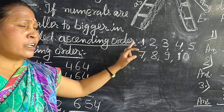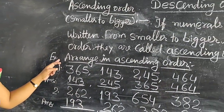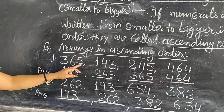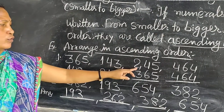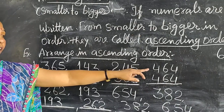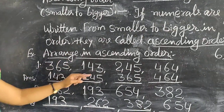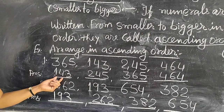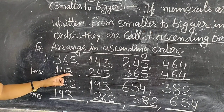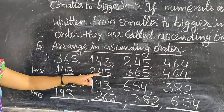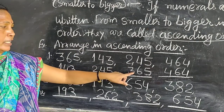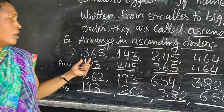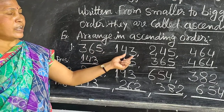So this is ascending order. Example: arrange in ascending order. Number 1: 365, 143, 245 and 464. We find the smallest number. The smallest number is 143. After that 245, after that 365, and 464. So this is arranged in ascending order.